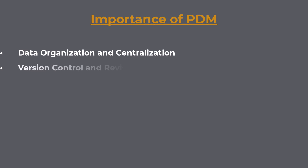Version control and revision history. PDM systems offer robust version control capabilities, allowing users to track changes and maintain a clear revision history of CAD files. This ensures that modifications made to designs can be easily monitored, compared, and reverted if needed. Version control prevents conflicts when multiple users are working on the same CAD project simultaneously, as the system keeps track of changes and manages concurrent access to files.